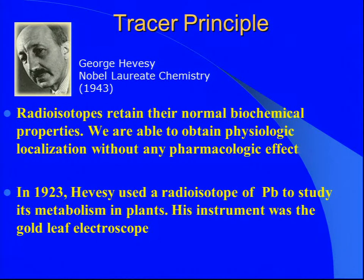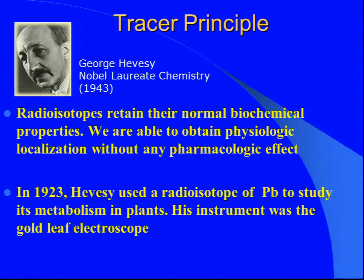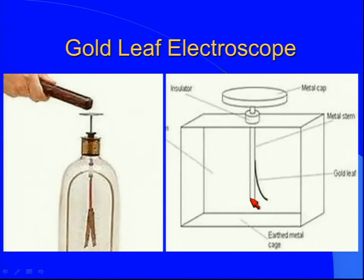This is one of the fathers of our specialty, Dr. George de Hevesy, a Hungarian man. We go all the way back to the 1920s and 1930s. He did something really interesting long before this was being used in humans. He took an isotope of lead and put it in the soil near a bunch of plants. He waited a couple of days, then took samples of the leaves, stem, and different parts of the plant. This is the instrument he used — the gold leaf electroscope. He took the stem and leaves and put them next to this electroscope. If it was radioactive and picking up the lead, the gold leaf would flick away from the lead bar.